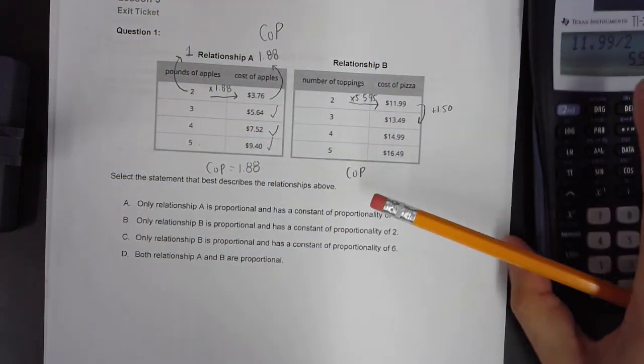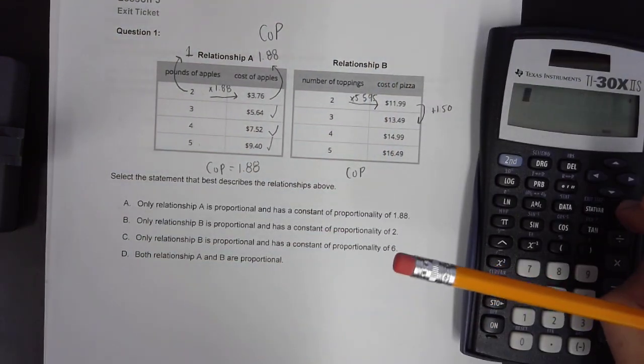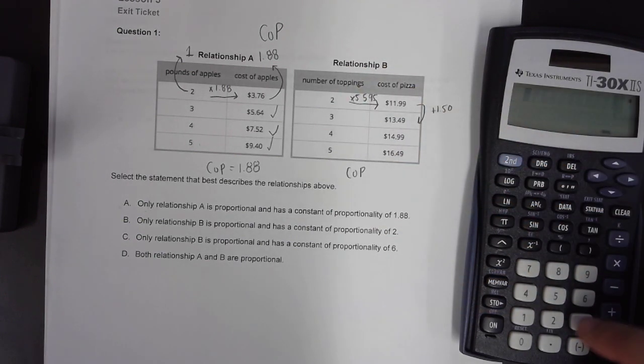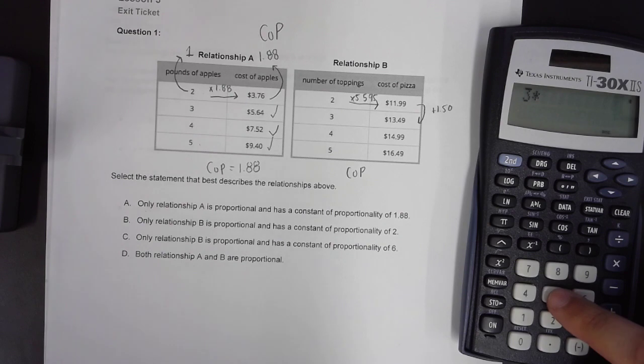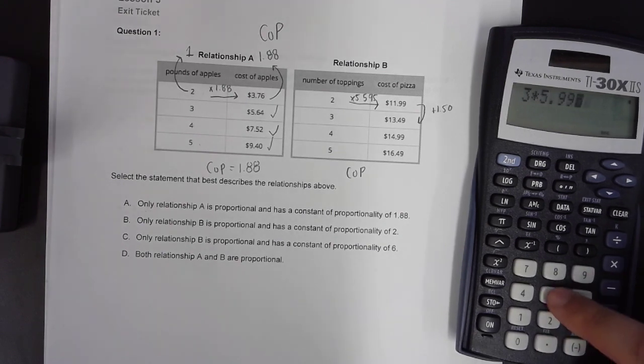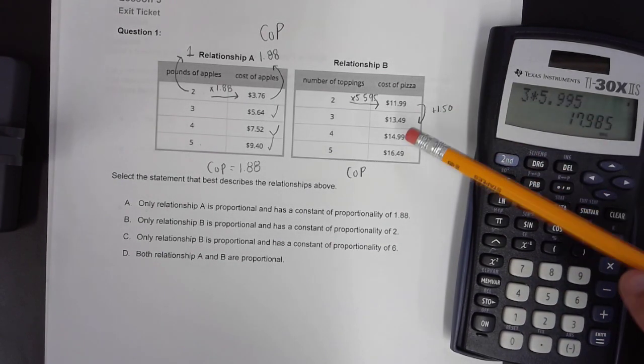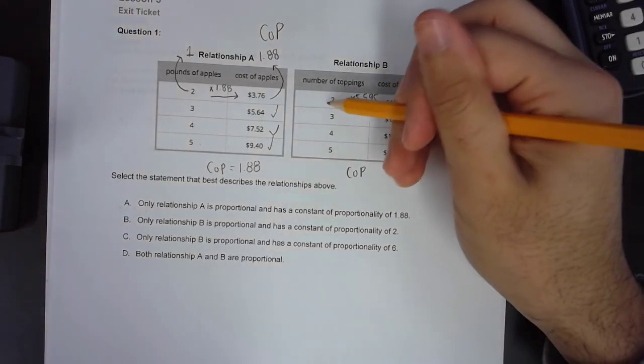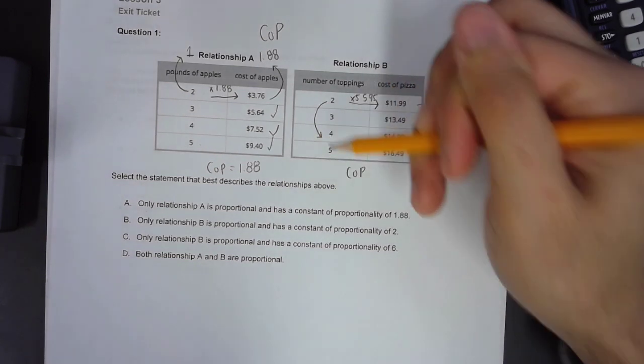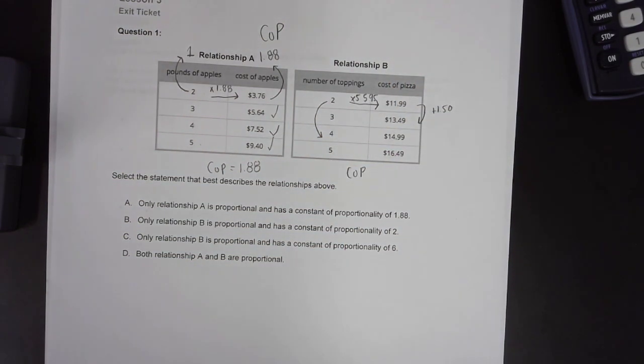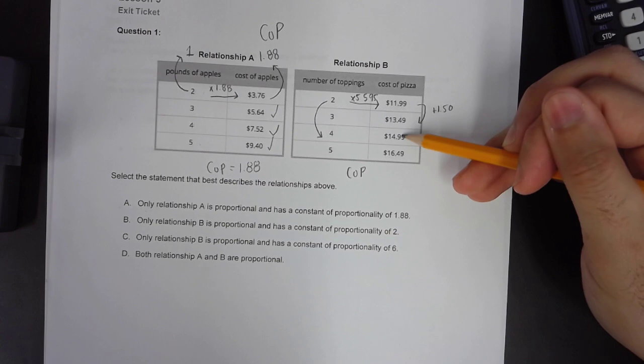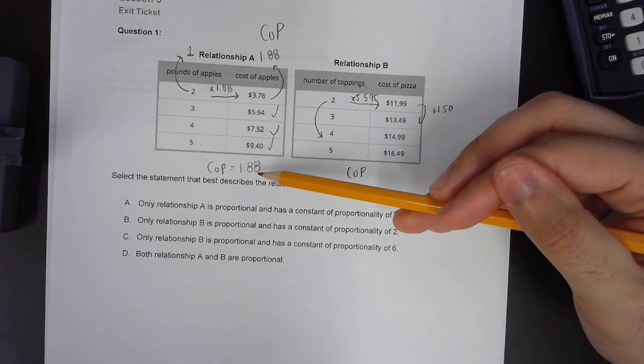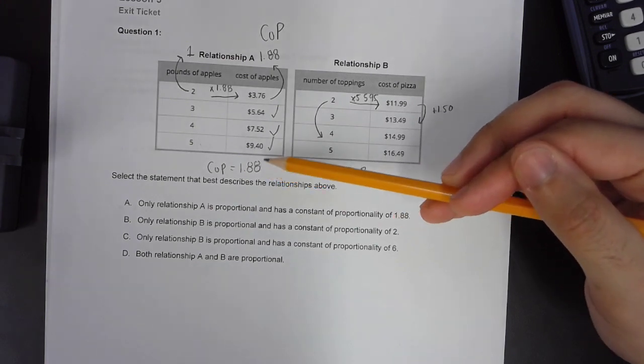Now, in order for this to be the case, I need to find out if 5.995 is what I need to multiply throughout the table. If I did 3 times 5.995, I got to 17.985, which is obviously not the one I'm looking for. In addition to that, I know that if my number of toppings was 2 to get me to $11.99, in order to get to 4 toppings, I would have to multiply my cost of pizza by 2 as well, which does not happen. Therefore, A is the only one that is proportional with a constant proportionality of 1.88.